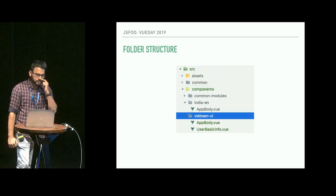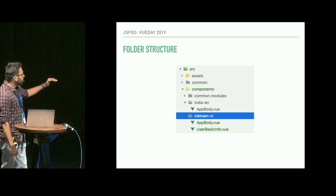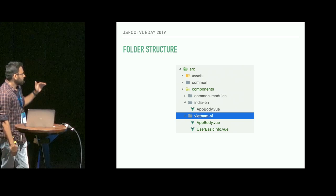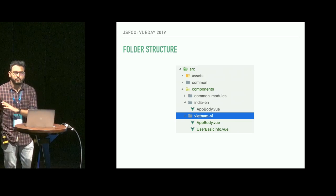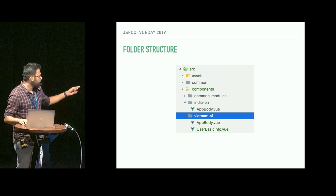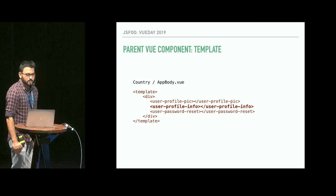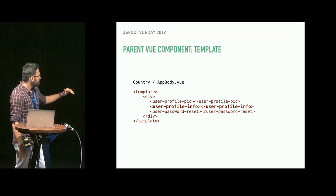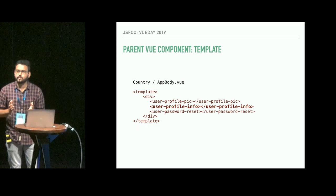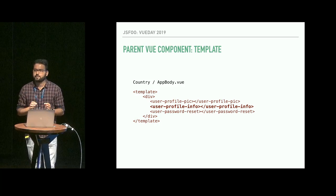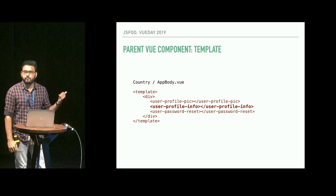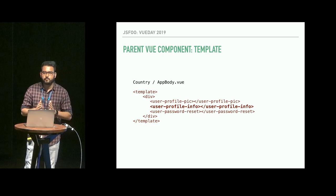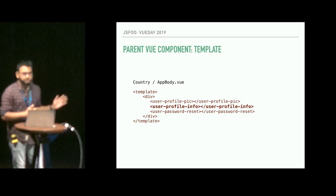Now let's see how the folder structure looks. Each country module has a separate folder, and each country folder has an app body. This separation of concern will help us avoid conflicts and each team will work on its own folder without disturbing any other country. Every country has an app body. The app body contains components — most of them will be reusable across countries. But in case we have a separate component based on a specific country, for example in India you'll need a KYC component which you won't use in any other country — we define the components we use accordingly.